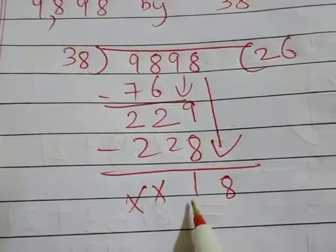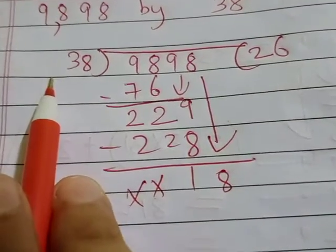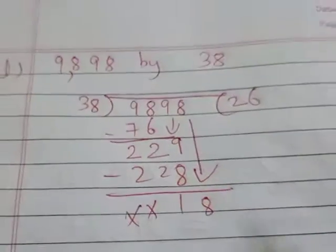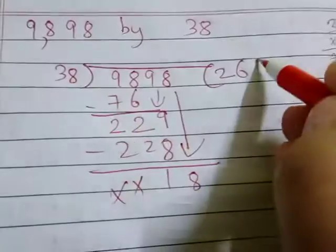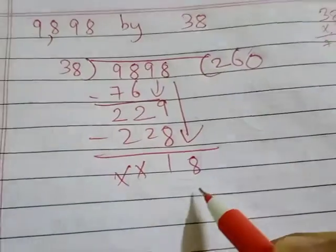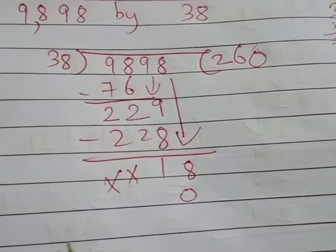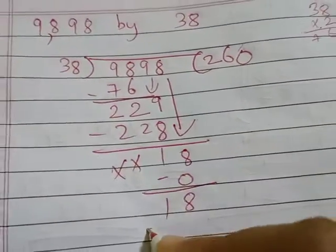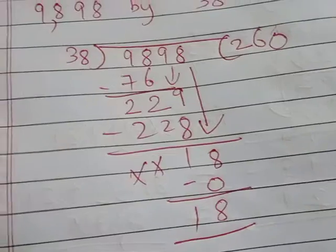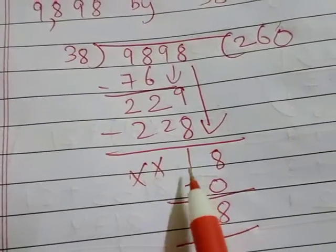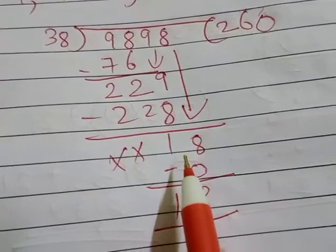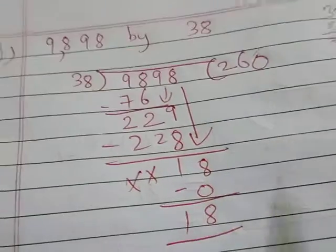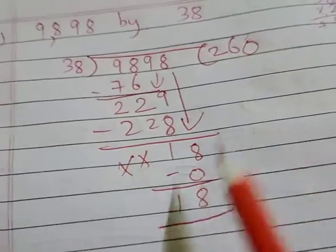We can write 38 times 0 equals 0. Then 18 minus 0 will be 18 itself. Don't leave the remainder as is if it's smaller. You must first write 0 and then solve, because 0 is in the table of 38.